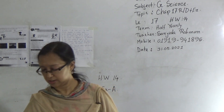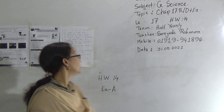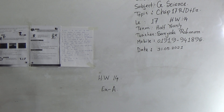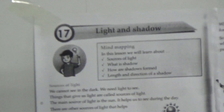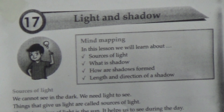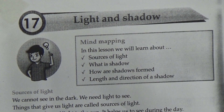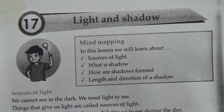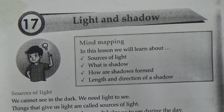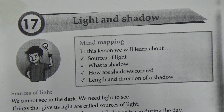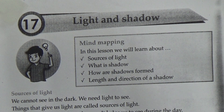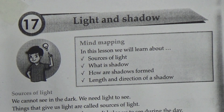My dear students, today we will discuss Chapter 17. The name of this chapter is Light and Shadow. You can see there are lots of light around us — in our home, in our car, in our bus, in the street. We get the main light from the sun. Sun is the main source of light. We also get light from the moon, and beside the light, we can also see shadow.